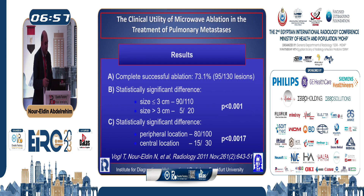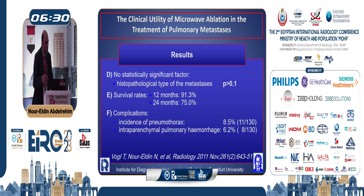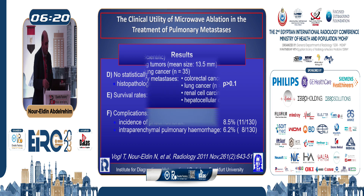We published a paper in Radiology in 2011 showing good results — around 72–73% complete ablation for 95 out of 130 lesions. The most important significant factor is lesion size: lesions less than 3 centimeters are adequately controlled compared to lesions more than 3 centimeters. Peripheral lesions are well controlled, histopathology does not play a role in management, and the incidence of complications was less than 10% regarding pneumothorax and hemorrhage.